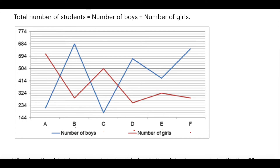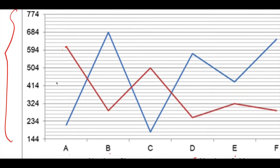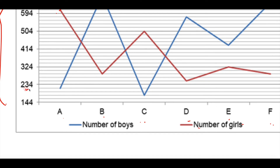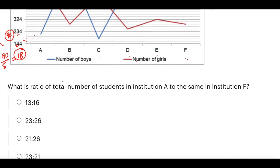Next is a line graph where the blue line denotes the total number of boys and the red line denotes the total number of girls in six institutes: A, B, C, D, E, and F. Before solving, find the value of each space: 234 − 144 = 90, and there are 5 spaces, so each space = 90 ÷ 5 = 18.